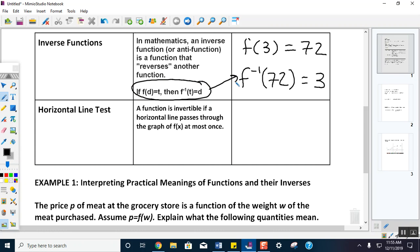Horizontal line test is the test we're going to use to determine if something is invertible. A function is invertible if a horizontal line passes through the graph of f of x at most once. I'm going to draw two graphs up here.